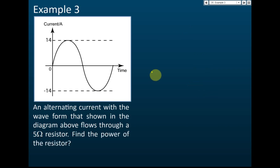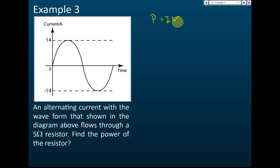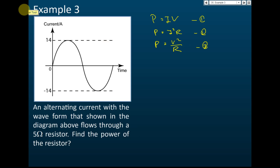Example three: An alternating current with the waveform shown flows through a 5 ohm resistor. Find the power of the resistor. We have a few formulas: P = IV, P = I²R, and P = V²/R. In this case, since we have resistance and current, we use formula 2: P = I²R.